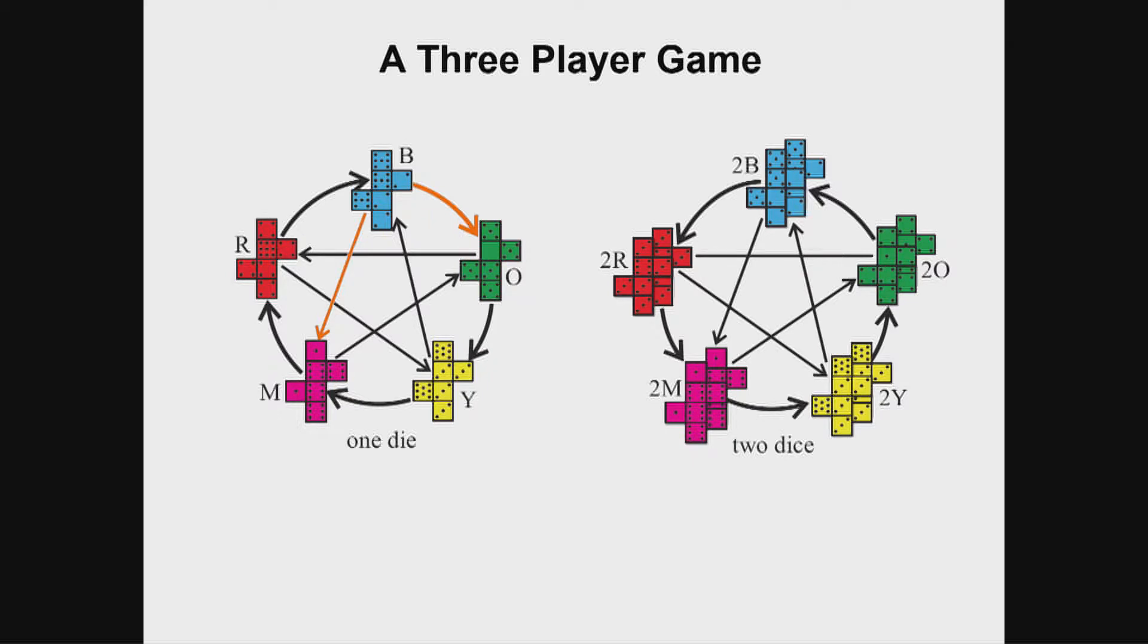If, on the other hand, my two opponents pick yellow and magenta, then I should pick red in a two-dice version of the game, which means you shouldn't volunteer your rules too early. But if you do that, you can beat each opponent at the same time.